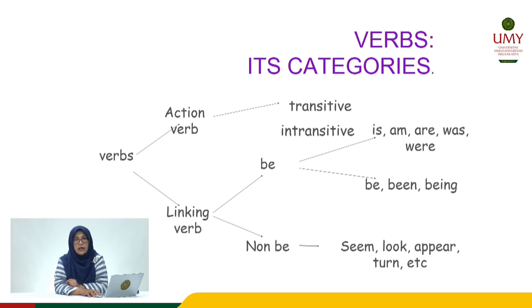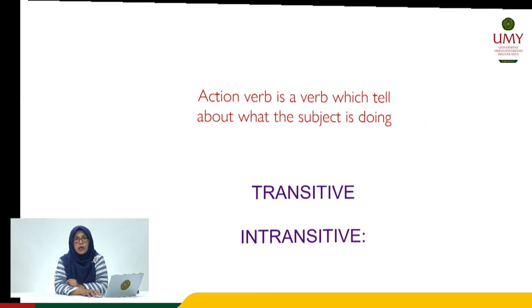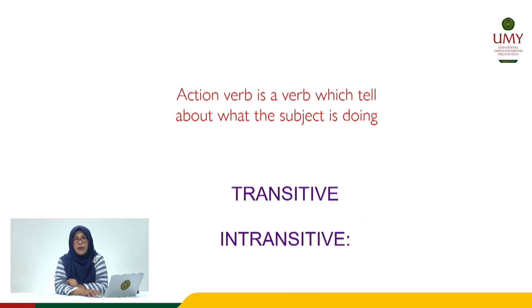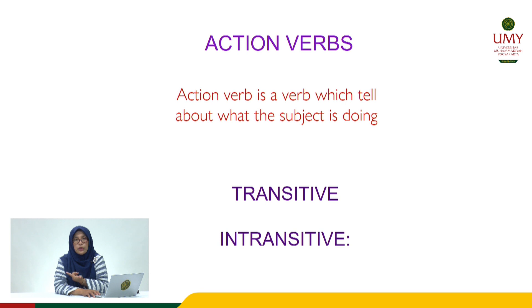And the linking verb can also be divided into two more categories: linking verb B and non-B. To make it more clear, let us discuss these categories one by one. We are going to start with action verb. Action verb is a verb which tells about what the subject is doing. There are two types: transitive verb and intransitive verb.